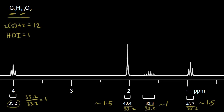These numbers tell us the relative ratio of protons giving us these four signals. We need to think about 10 protons total. This is only relative, so to get the absolute number of hydrogens, multiply these numbers by two. One times two is two — this signal represents two protons. 1.5 times two is three — this signal represents three protons. One times two is two protons. And 1.5 times two gives three protons.